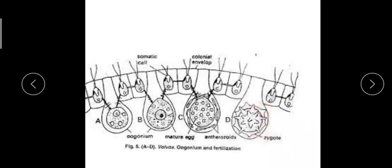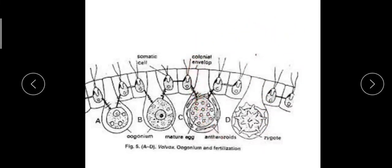As a result, a zygote is formed. Fertilization occurs inside the colony, where an actively swimming spermatoid comes in contact with a stationary egg. The egg is stationary while the spermatoid is motile — it swims to the egg and fuses to form a diploid zygote.